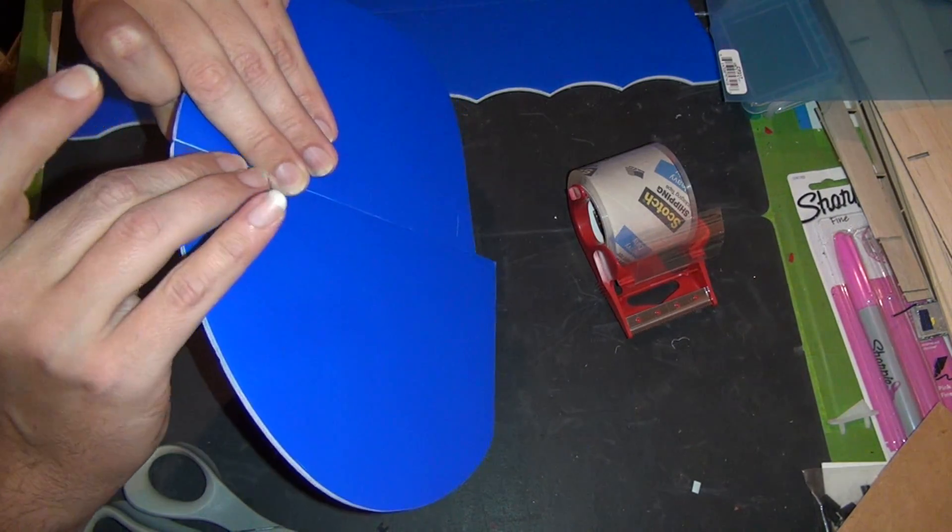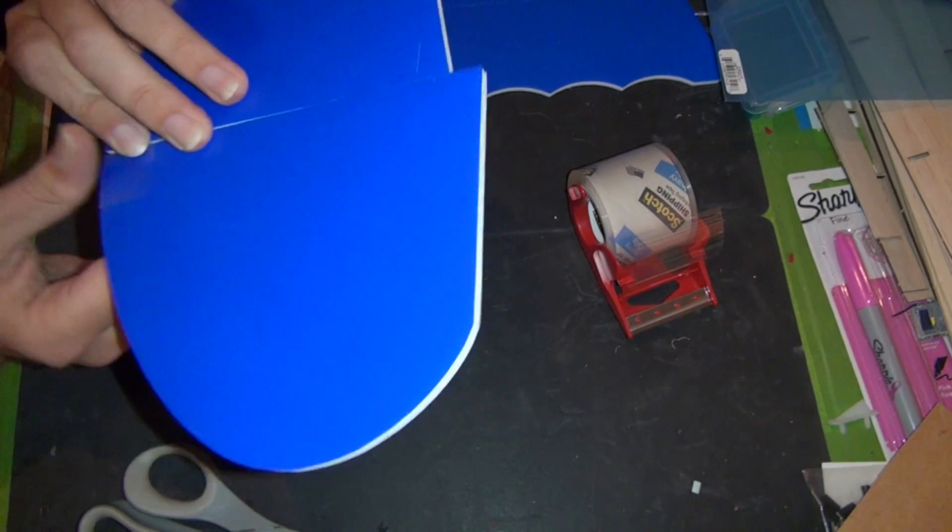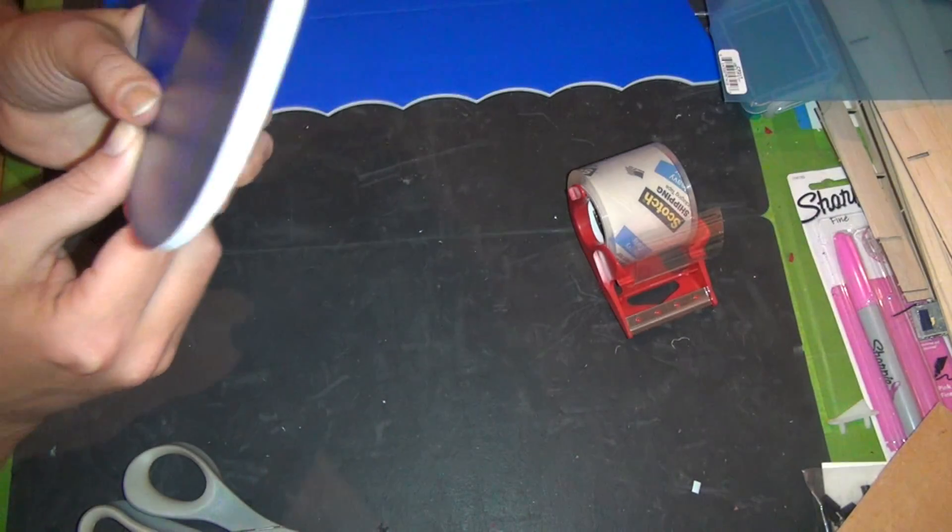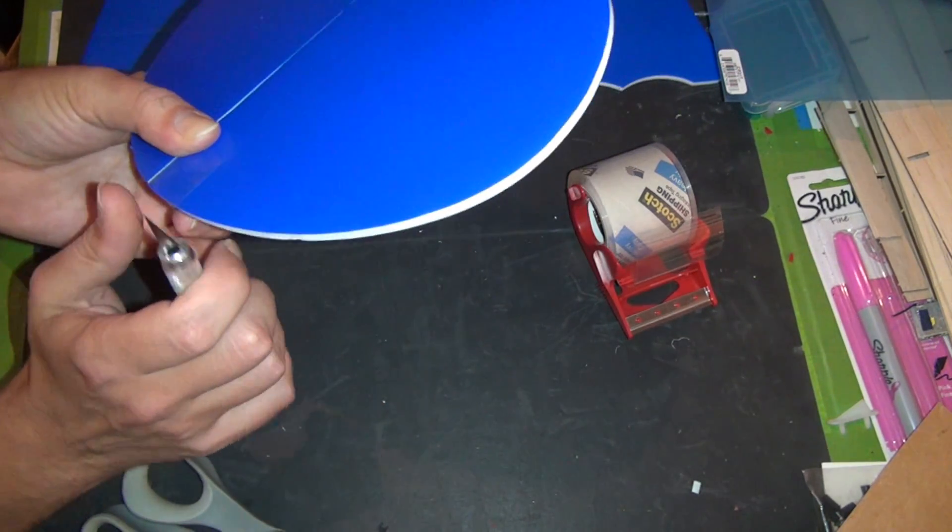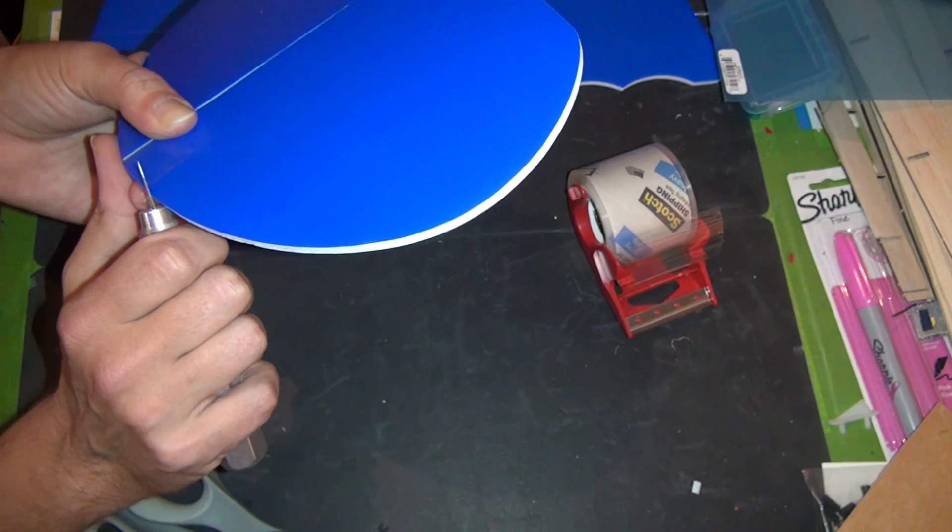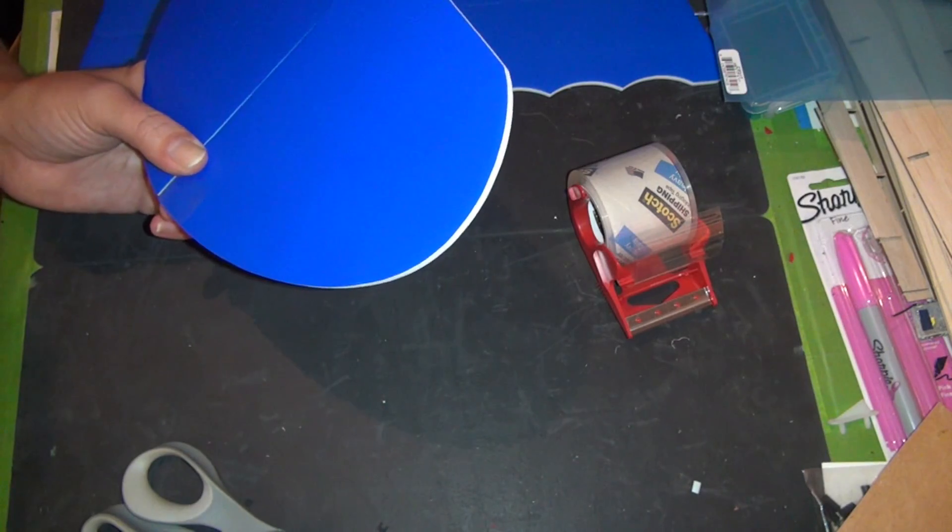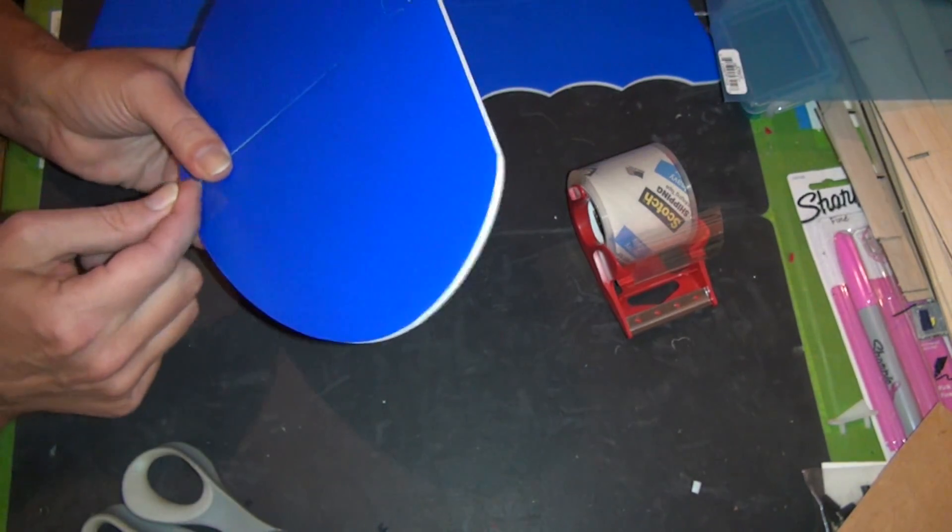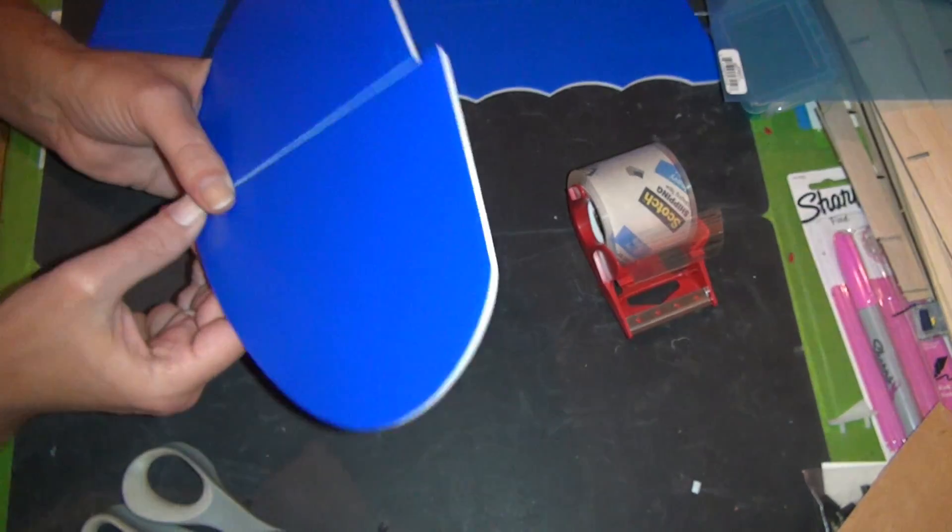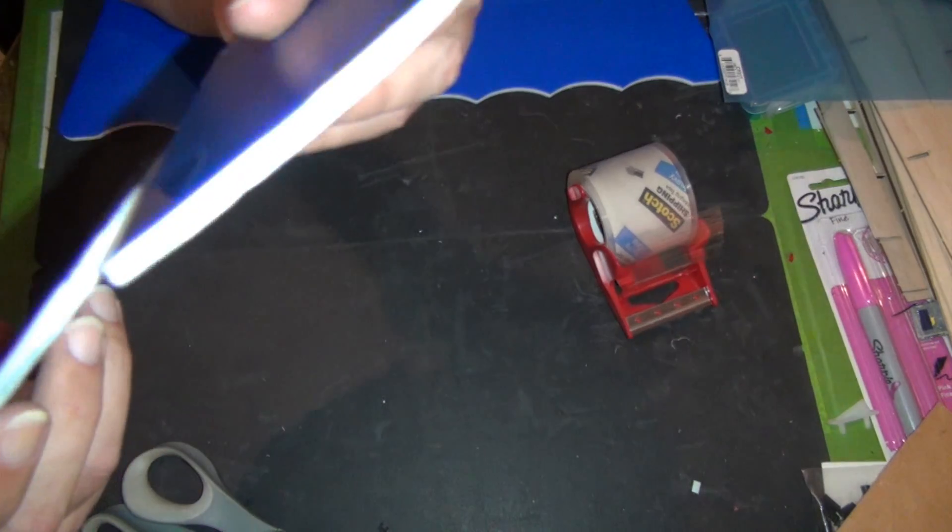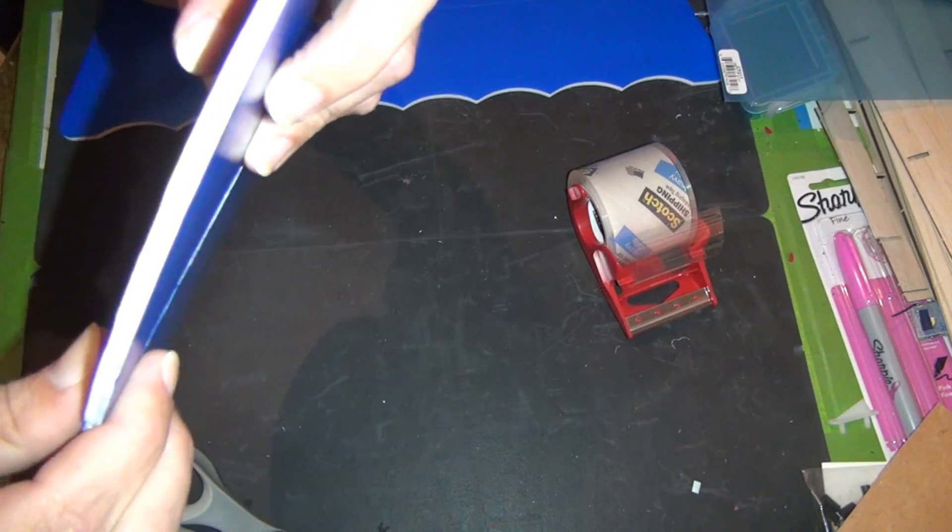Then just fold the other piece of tape over onto this piece, creasing it at the edge as best you can. In this case I got a little bit over the edge, so just cut that off with your knife.